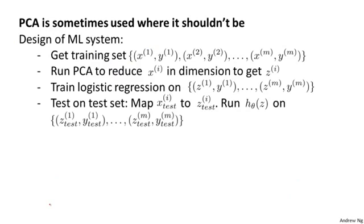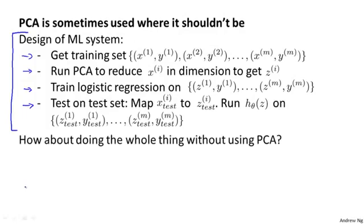Finally, one last misuse of PCA. PCA is a very useful algorithm. I often use it for the compression or the visualization purposes. But what I sometimes see is people sometimes use PCA where it shouldn't be. So here's a pretty common thing that I see, which is if someone's designing a machine learning system, they may write down the plan like this. Let's design a learning system. Get training set and then run PCA, and then test on my test data. So often at the very start of a project, someone would just write out a project plan that says, let's do these four steps with PCA inside. Before writing out a project plan that incorporates PCA like this, one very good question to ask is, well, what if we were to just do the whole thing without using PCA?